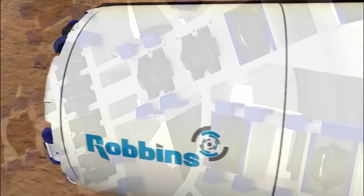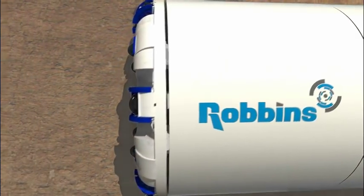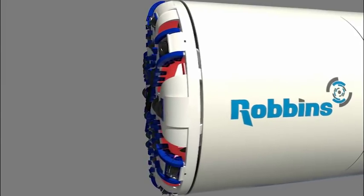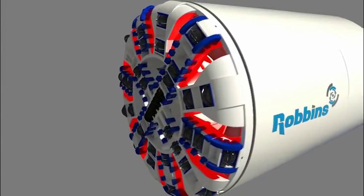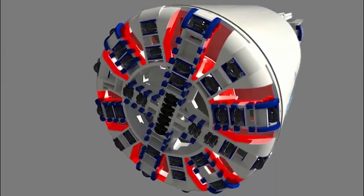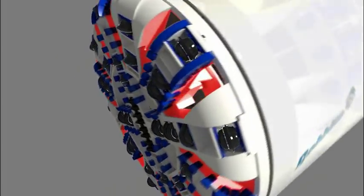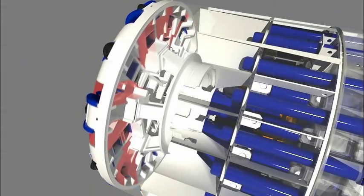As the cutter head turns, the cutting tools make contact with the material to be excavated, known as the face. A unique smooth flow spoke type cutter head design draws more muck from the face with a large opening ratio, resulting in decreased torque and thrust requirements and less abrasive wear on the cutter head structure.